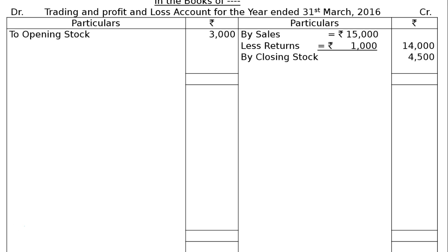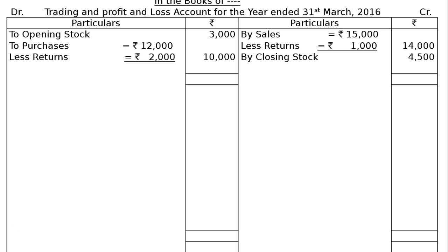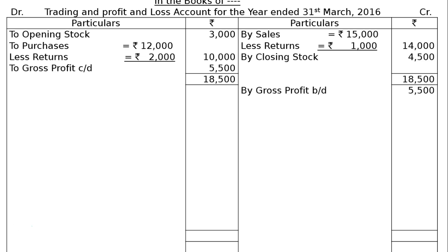On the debit side, the opening stock is Rs 3,000. To purchases Rs 12,000; in the inside column, less returns Rs 2,000, totalling Rs 10,000 in the final column. Hence, add the credit side that is Rs 18,500, write down in the debit side and find out the difference — gross profit carried down is Rs 5,500. In the Profit and Loss Account, that is by gross profit brought down Rs 5,500.